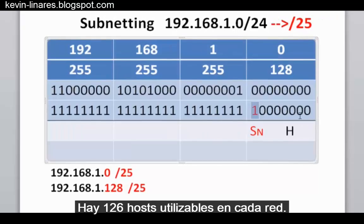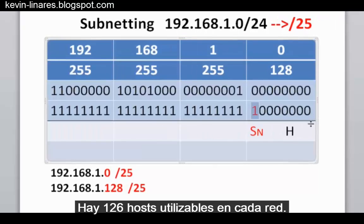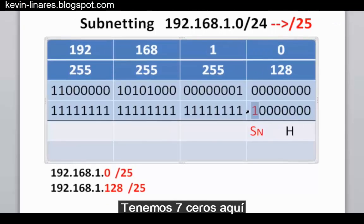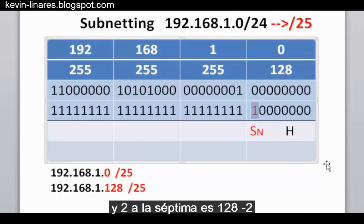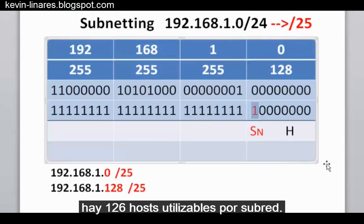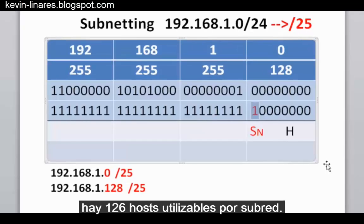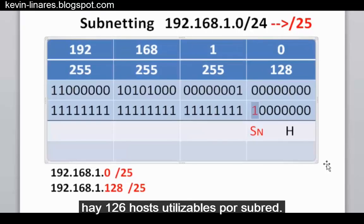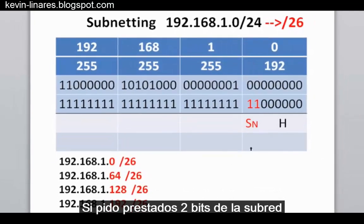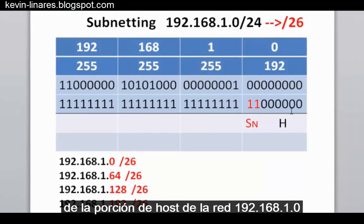The hosts on each network are 126 usable hosts. We have seven zeros in the host portion, and two to the seventh power is 128, minus two makes 126 usable hosts per subnet.